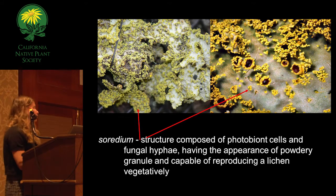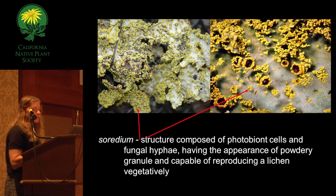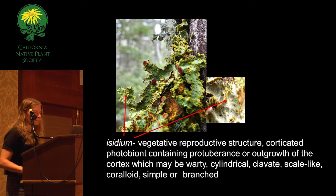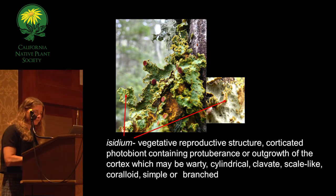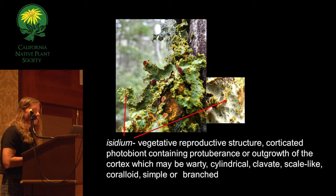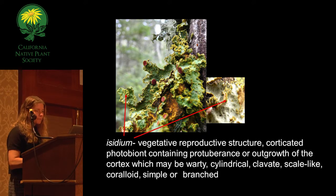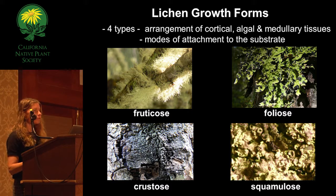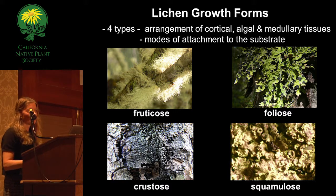The thallus refers to the whole entire lichen structure. The soredium is composed of photobiont cells and has an appearance of a powdery cortex — it looks warty, cylindrical, and scale-like, appearing as little dots on top of the thallus. The isidium also contains both the photobiont and the mycobiont and is another structure occurring in the thallus for reproduction.